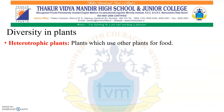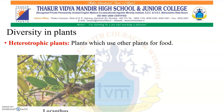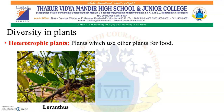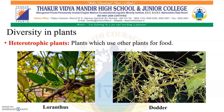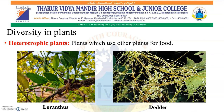Heterotrophic plants: Plants which use other plants for food. Such plants cannot make their own food with the help of photosynthesis. That is why they have to depend on other plants for their food requirements. Examples are Loranthus and dodder.